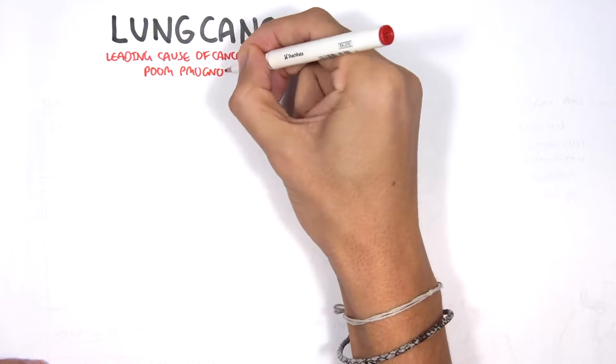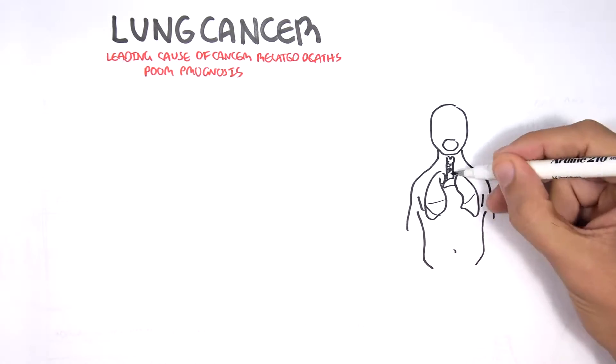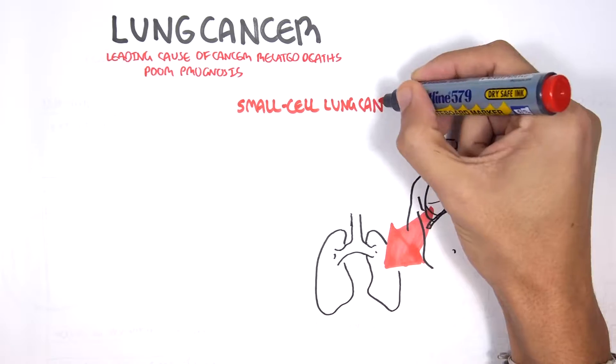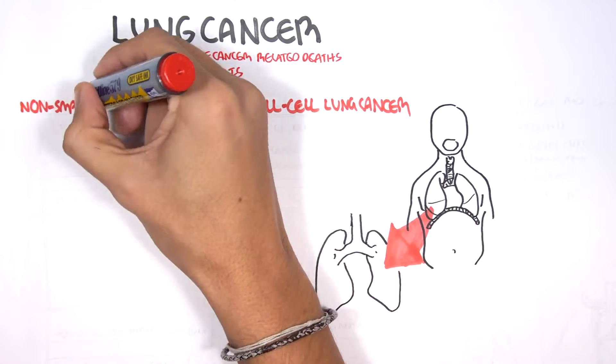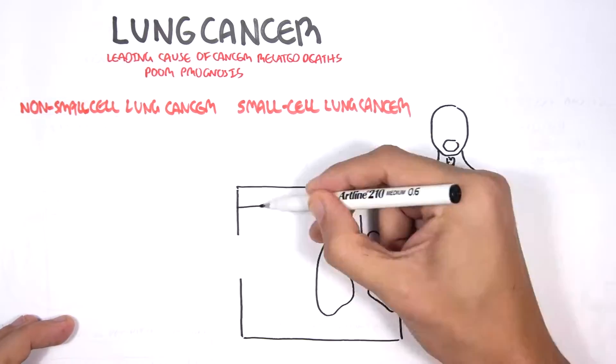In this video, we will focus on lung carcinomas. Let us look at the different types of lung carcinomas, and it can be divided into two broad types: small cell carcinoma and non-small cell carcinoma.